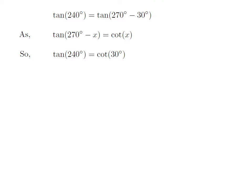Let us apply the above identity for tangent of 240 degrees. Here, x is 30 degrees, so tangent of 240 degrees is equal to cotangent of 30 degrees.